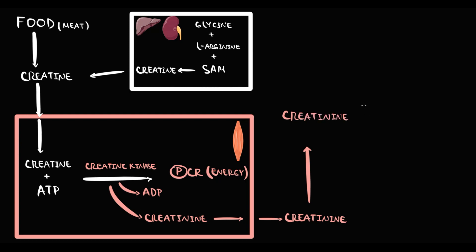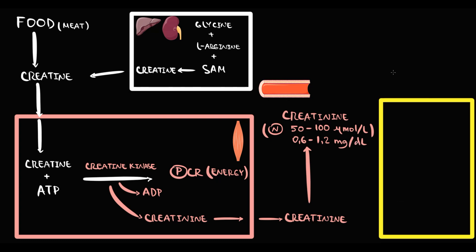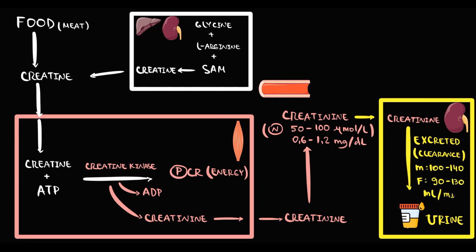The normal values of blood creatine are 50 to 100 micromoles, or 0.6 to 1.2 mg per deciliter. Creatine circulates in this state until it reaches the kidneys, where kidneys uptake creatine and excrete it into the urine. The rate of creatine clearance is 100 to 140 mL per minute for males and 90 to 130 mL per minute for females.